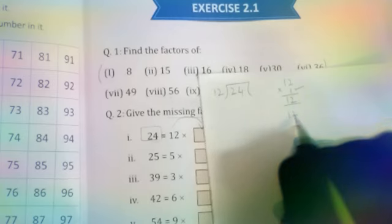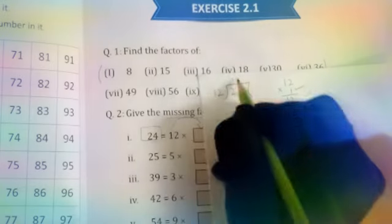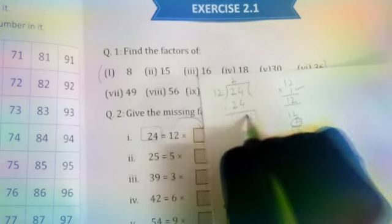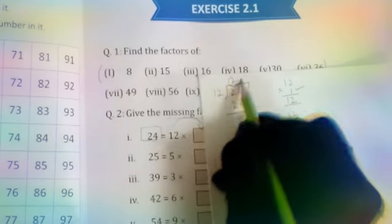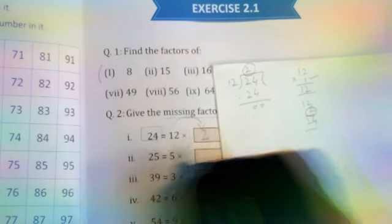If you don't know the 12 table, we use the multiplication method. First multiply 12 by 1 - any number multiplied by 1 gives the same number. Next multiply 12 by 2: 2×2=4, 2×1=2, we get 24. This came from 2. So 12, 2's are 24. This is solved. So what's the answer? 2.